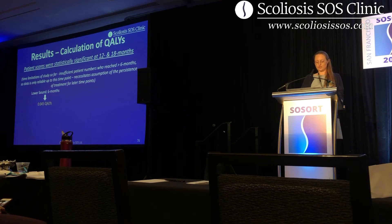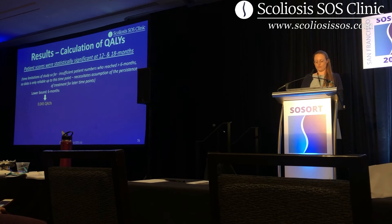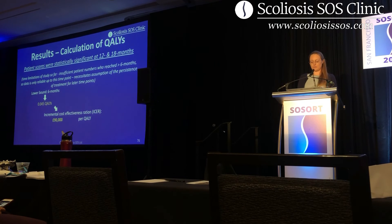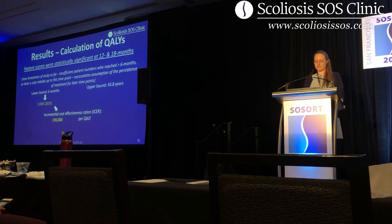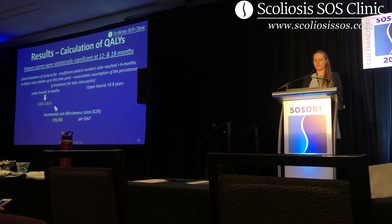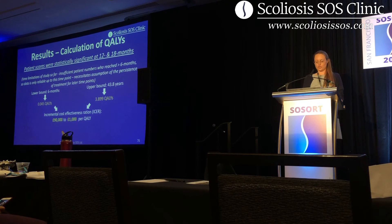To look at both extremes: assuming that the treatment benefit ended after just six months, additional QALYs were 0.045, meaning the ICER would be £90,000 per QALY. However, assuming the treatment effect continued for 43.8 years — the average life expectancy of patients in this study — additional QALYs were 3.899, meaning the ICER would fall to just £1,000 per QALY.